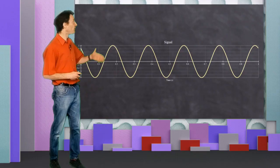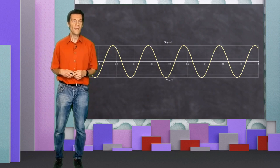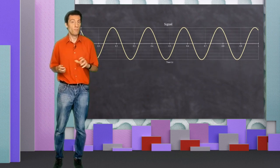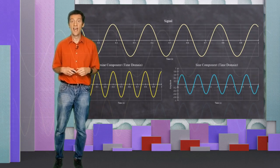Take this simple 5 Hz sinusoid as an example. If I break it down into its component cosine and sine waves, they look like this.